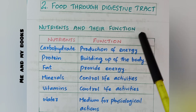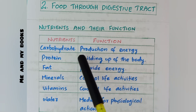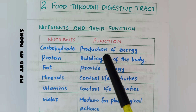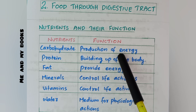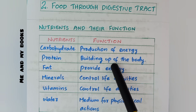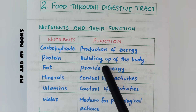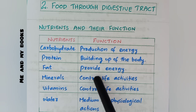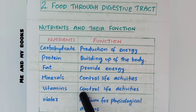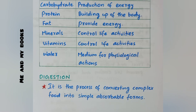First heading: Nutrients and their functions. Carbohydrate — production of energy, it helps in producing energy needed for life activities. Protein — building up of the body, growth and development. Fat — also provides energy like carbohydrate. Minerals — control life activities. Vitamins — also control many life activities. Water is very essential; it is a medium for physiological actions taking place in our body.